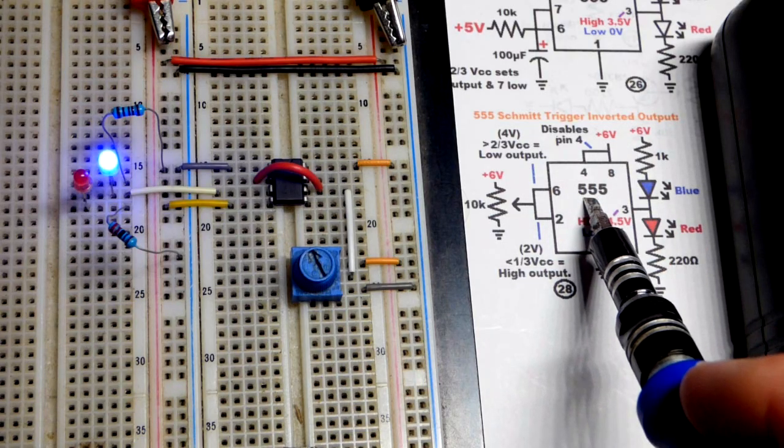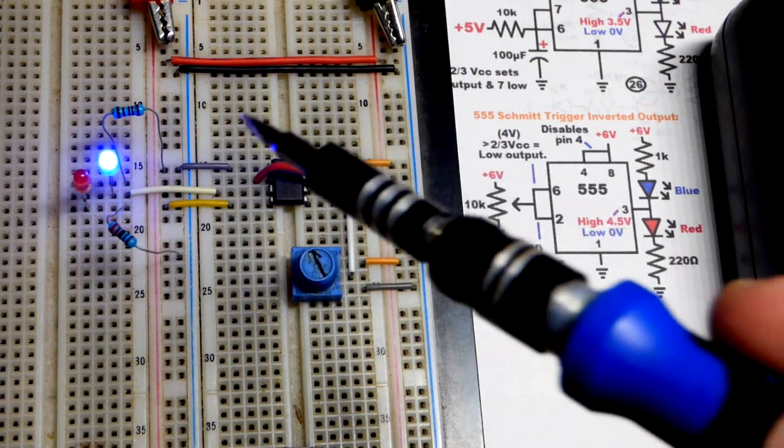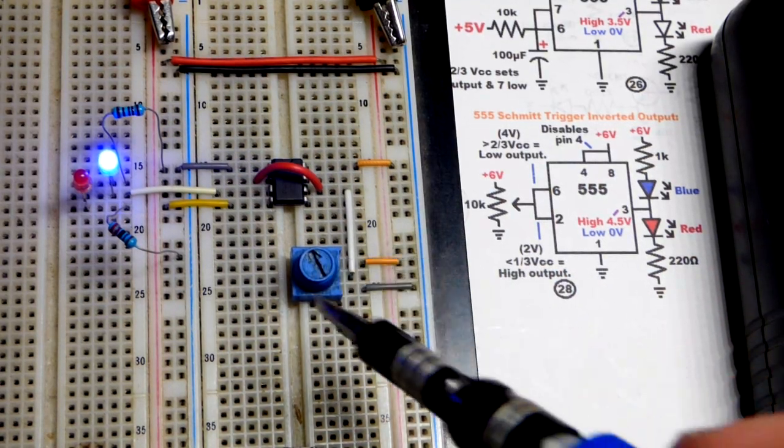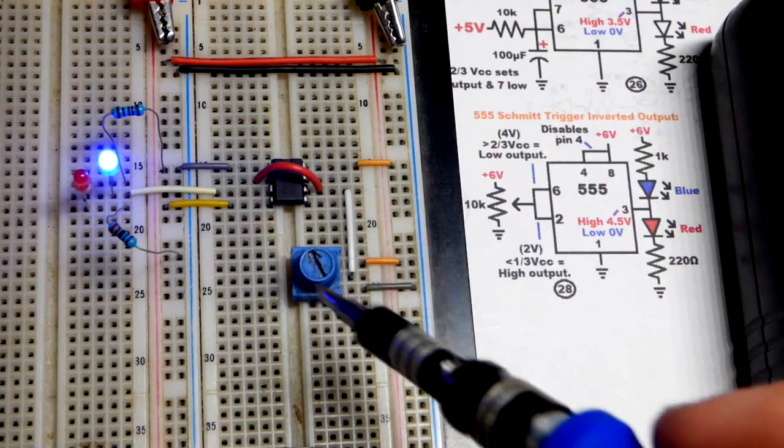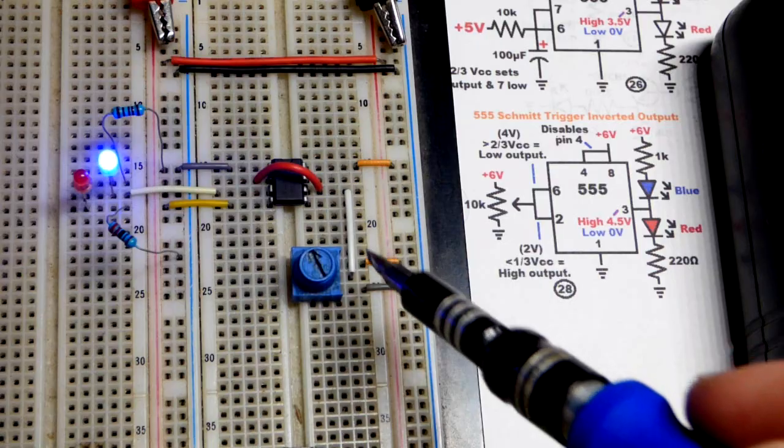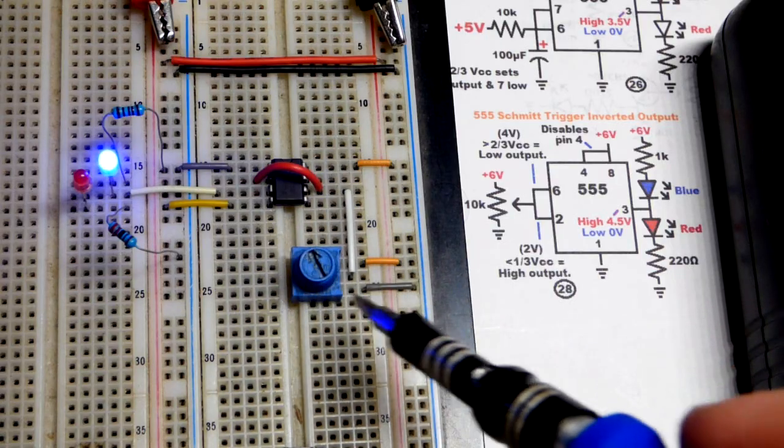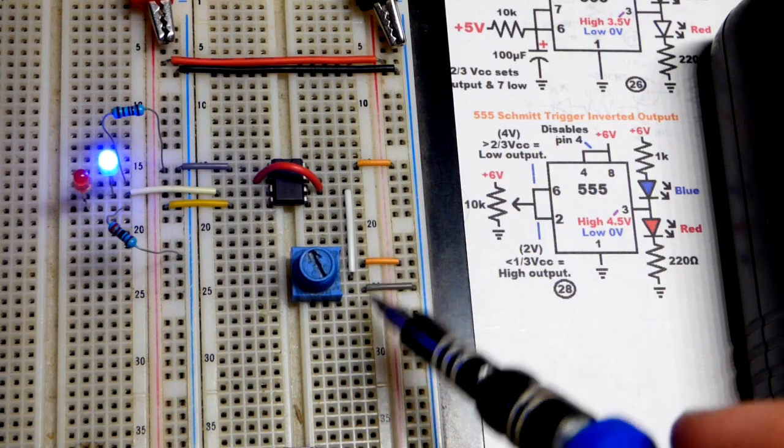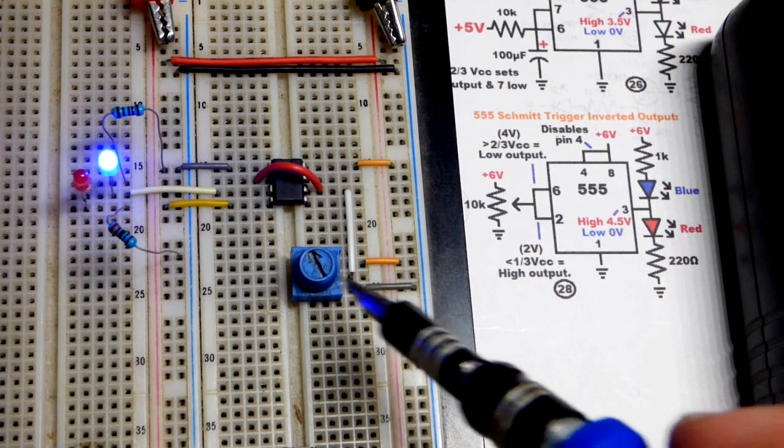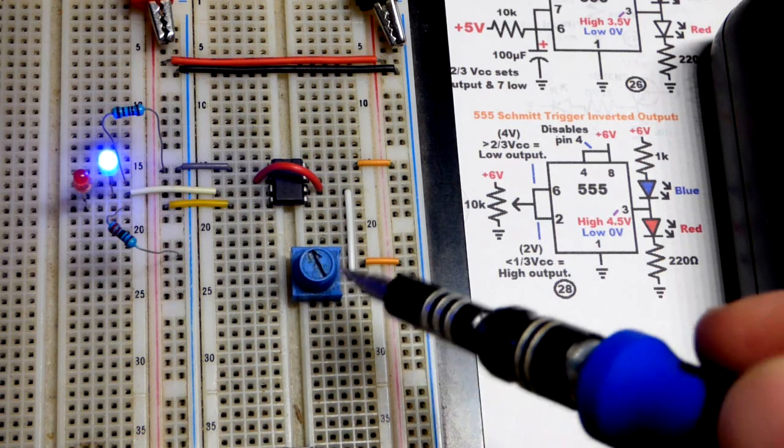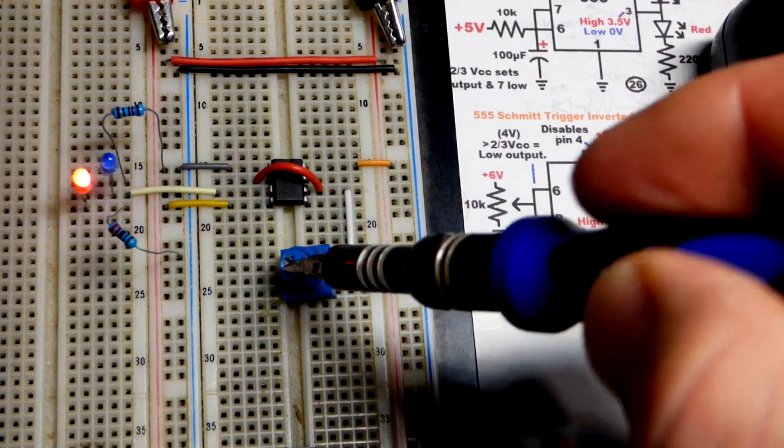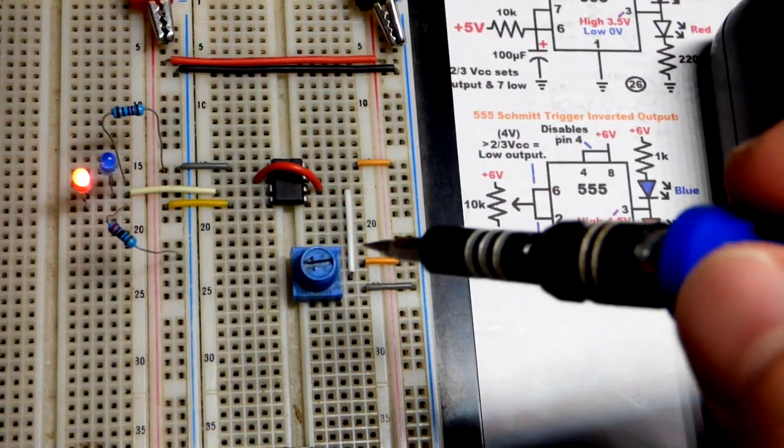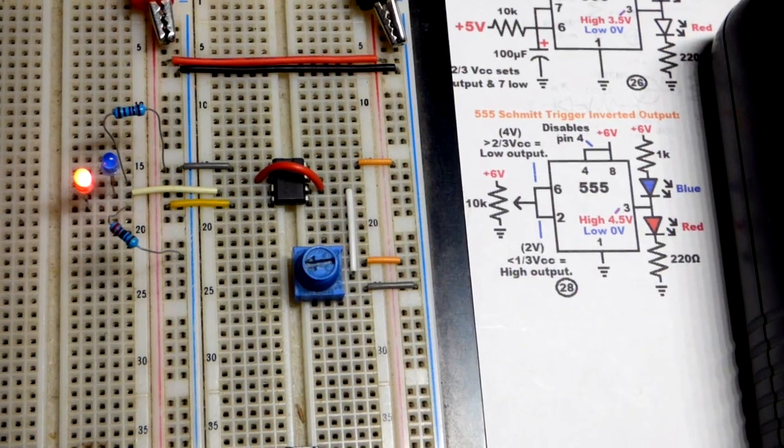But you could also use the 555 timer to invert the output from what the input signal is. So you don't have to use a voltage divider like this. This is called a trim pot. There's a resistive element that goes from one end to the other, and those two pins are there. So we've got the power supply voltage across there. And then there's a wiper that slides along there. So if you set it halfway, you get half of the output voltage.